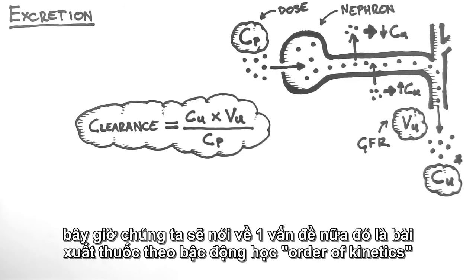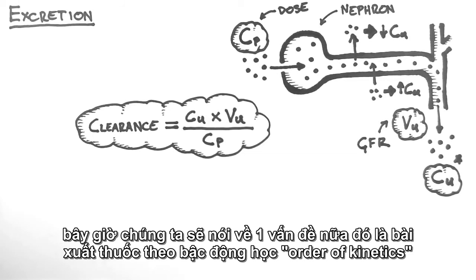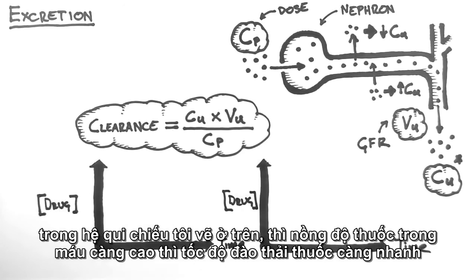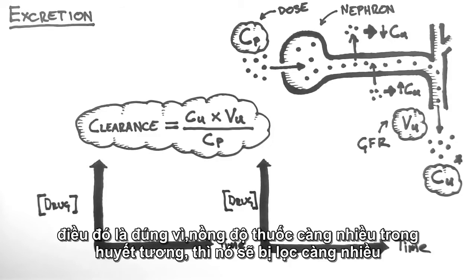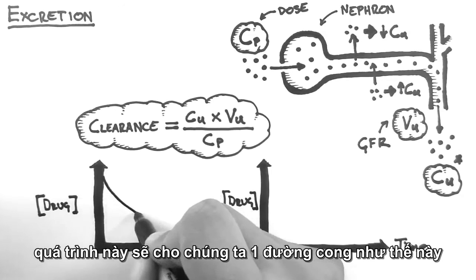Now let's talk about something slightly different: orders of kinetics. In the system I have drawn above, the higher the concentration in the plasma, the faster the drug will be excreted. This makes sense because the more drug in the plasma, the more in the filtrate, and thus the more drug in the urine.